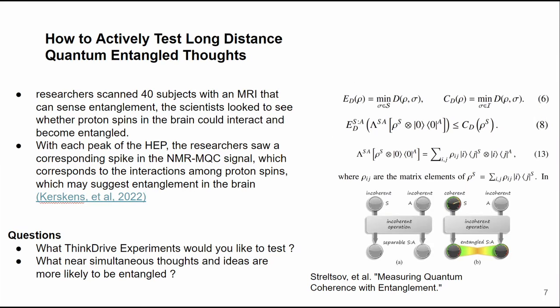How to actively test long-distance quantum entangled thoughts. These researchers found that the research suggested entanglement in the brain based on NMRI signals and aligned proton spins. So the key question becomes, what near simultaneous thoughts and Think Drive experiments would you like to test?